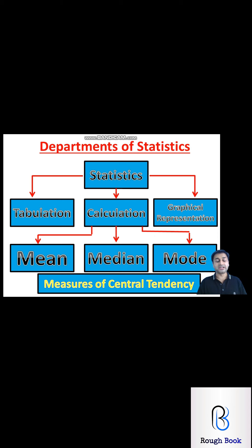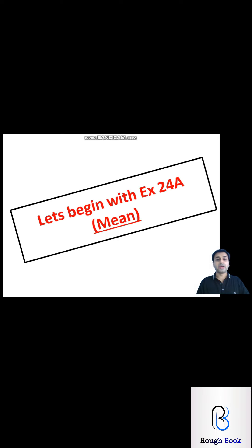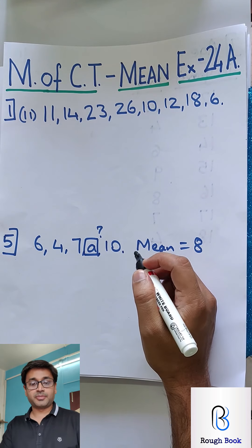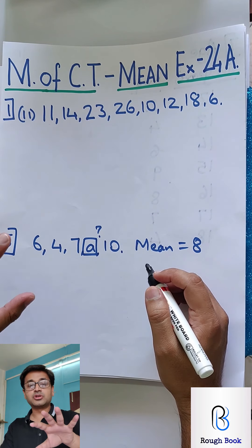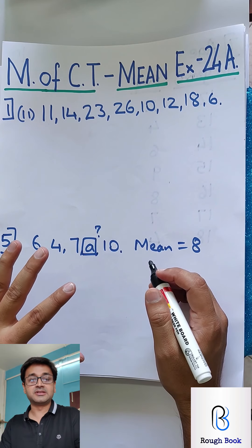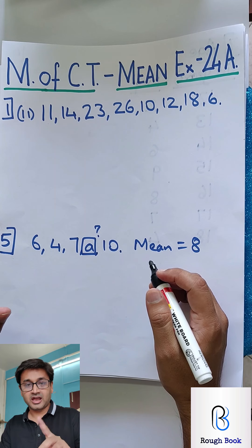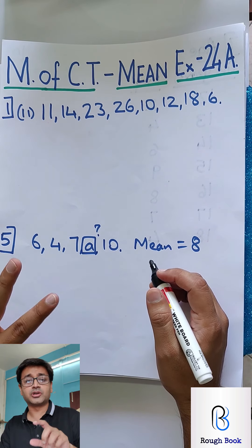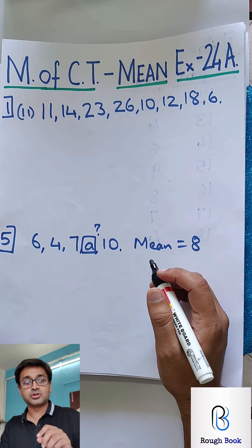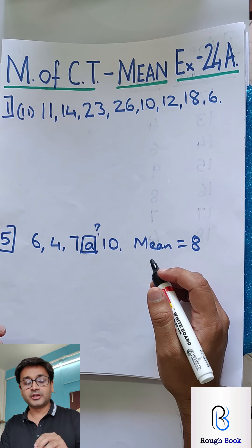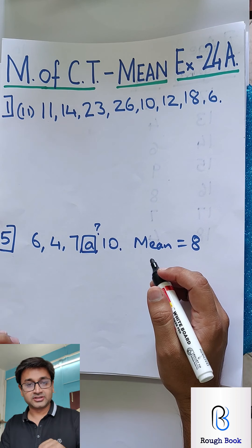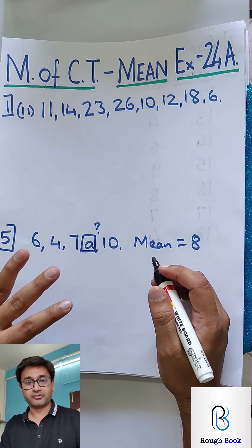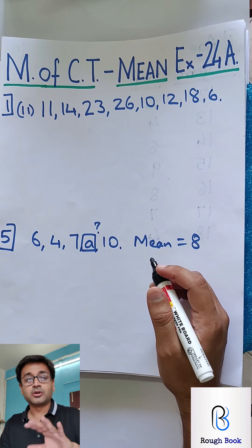Right now we need to understand only these three. The first one, mean, has different ways of calculating it, which we will understand in the first exercise of chapter 24, measures of central tendency. Let us begin with exercise 24 and calculate mean. Today we are getting into mean — that is a part of statistics — exercise 24A. This is one of the most important topics. In the boards every year, we see one question on mean for four marks and one on median for six marks — ten marks minimum from this chapter. Sometimes there's also a question on mode, so fourteen marks. A very important topic, and I am 100% sure I am going to make this very simple for you.